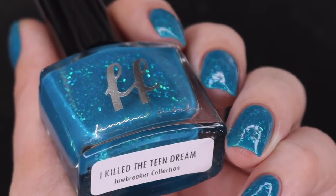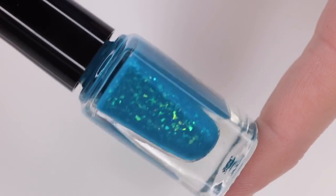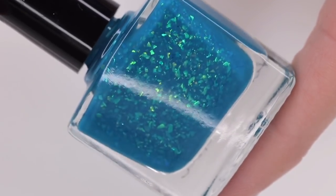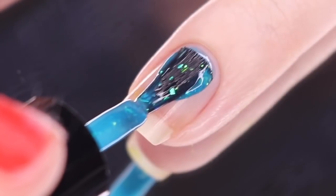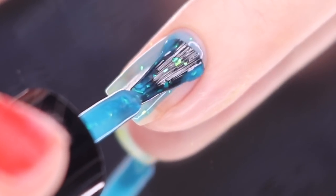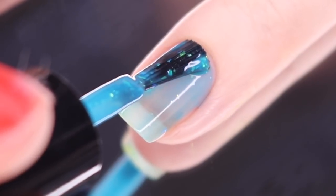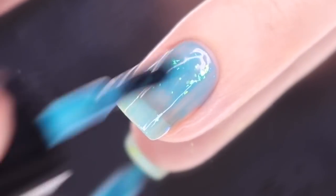We're going to round out the collection today with I Killed the Teen Dream. This I think would be my second favorite. This one is described as a smooth teal blue crelly with blue to green shifting iridescent flakes. I am like a huge flake fan. I feel like even if they go out of style, they'll never go out of style for me.